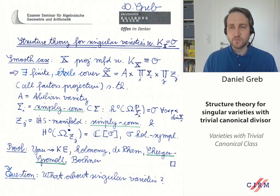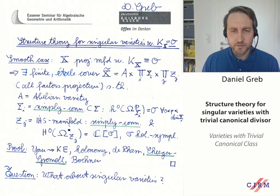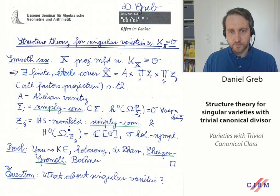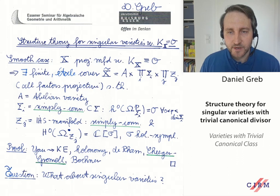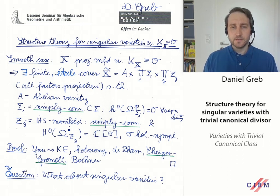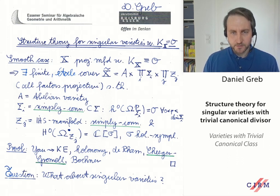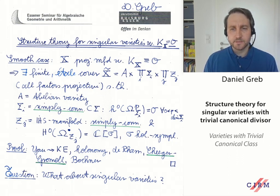Just to remind you about the proof, which was presented in another talk: by Yau, we know that there is a Kähler-Einstein metric, and then we use holonomy theory — in particular the de Rham decomposition theorem for the universal cover — which splits into a flat factor and a compact factor by the very important Cheeger-Gromoll theorem. And then we also use the Bochner principle about parallel holomorphic forms. So a lot of differential geometry and analysis goes into this proof.